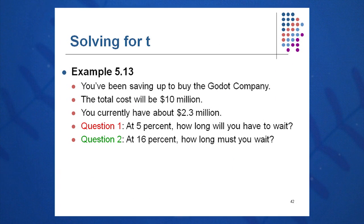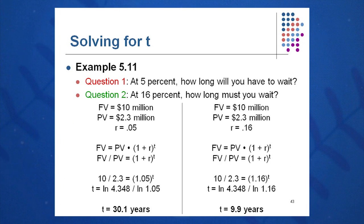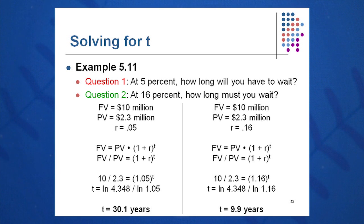You've been saving up to buy the Godot company. Total cost will be $10,000,000 and you currently have $2.3 million. At 5%, how long will you have to wait? At 16%, how long? In this case we're solving for the T variable — time. Present value is $2.3 million and future value is $10 million in both examples; the only difference is the rate. At 5% you must leave the money in the bank for 30 years; at 16% only about 10 years. One formula, very simple — find any one variable if given the other three.